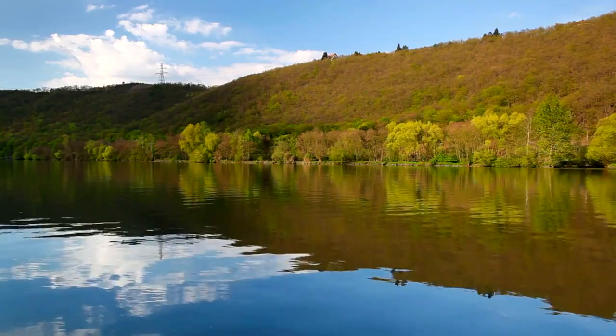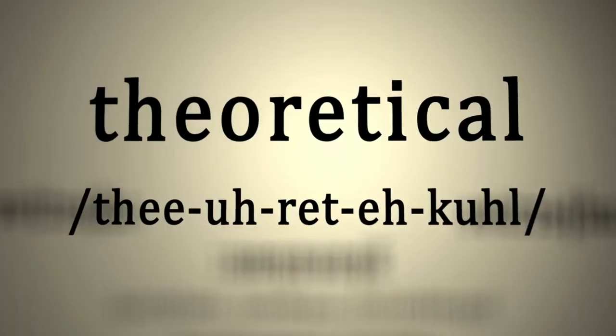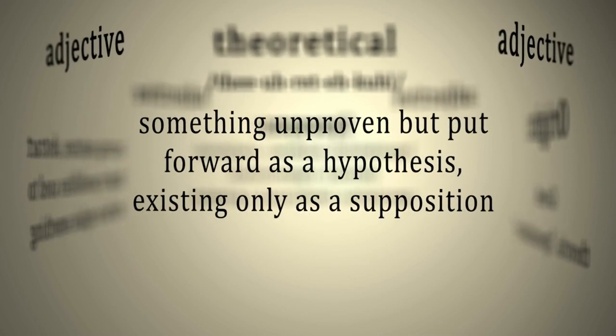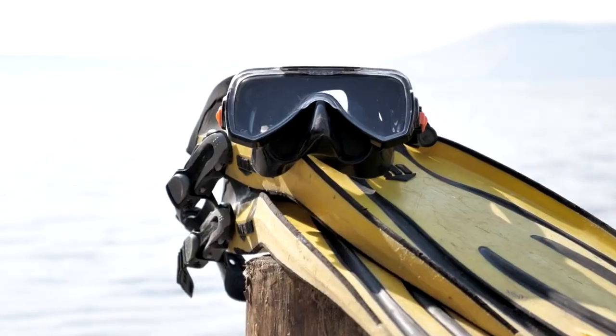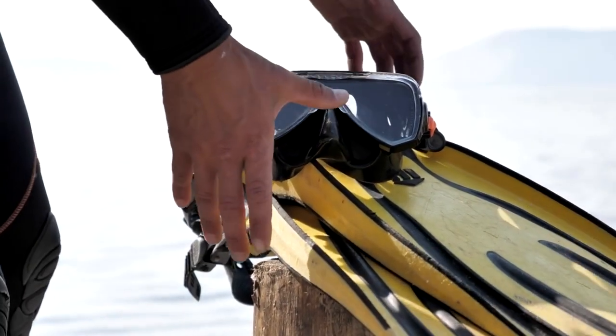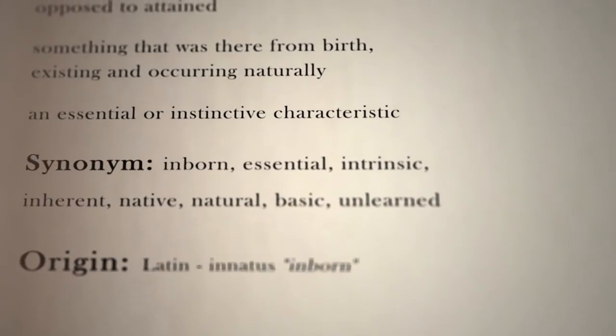By applying the principle of observational equivalence, we uncover a profound symmetry. The classical realm is mathematically indistinguishable from its quantum counterpart when appropriately described. This implies their divergence reflects perspective rather than innate essence.